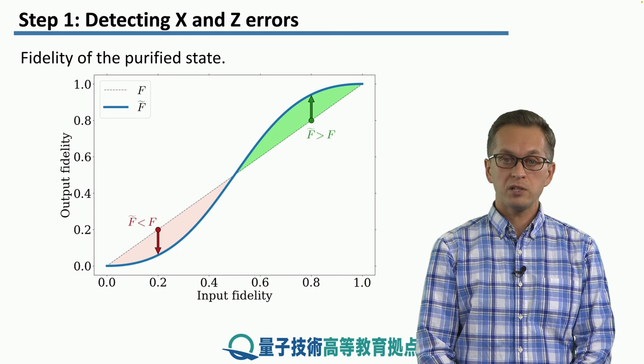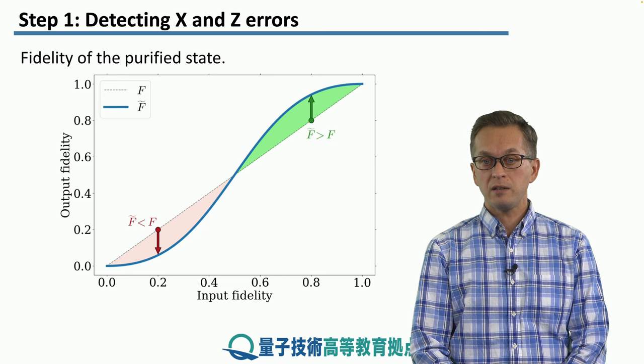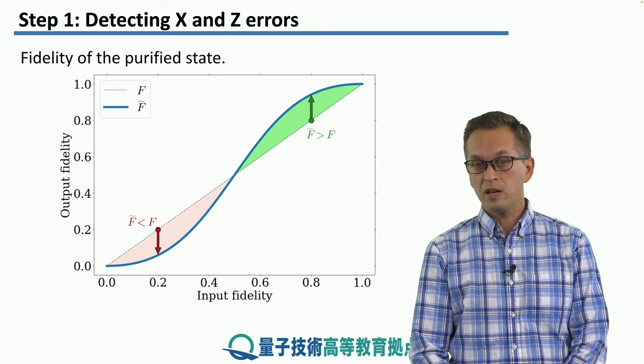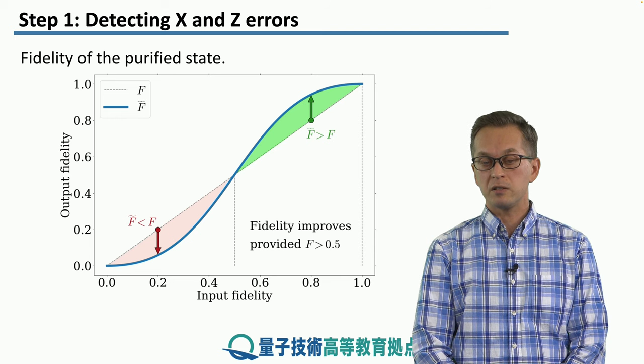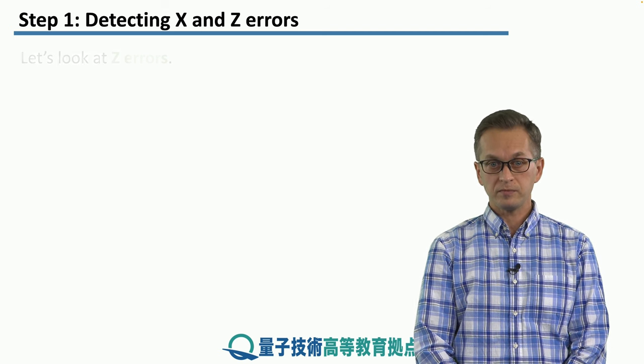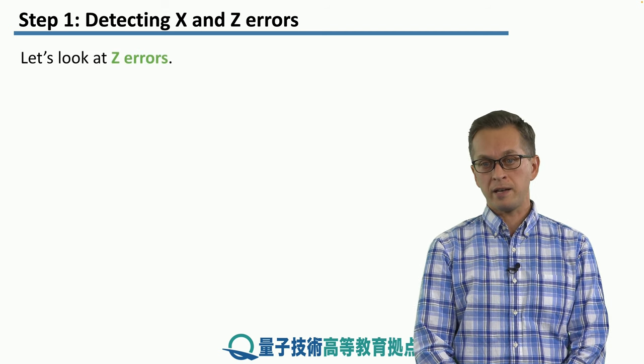So, in order for this purification scheme to detect errors and give us a state of higher fidelity, we must ensure that the base pairs have fidelity higher than 0.5. So that takes care of X errors.